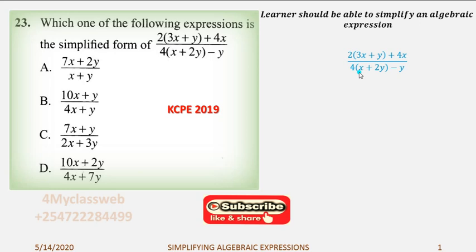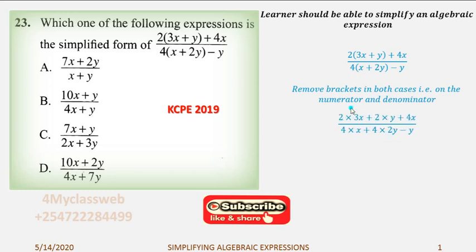I will do the same for the denominator part. And therefore, remove the bracket in both cases, that is on the numerator and the denominator part. That is the first thing that you should do. And as I have said, you take that factor which is outside the bracket, in our case here, take 2 multiplied by 3x plus 2 multiplied by y, and then add 4x. The same case for the denominator part, take 4 multiplied by x, add 4 multiplied by 2y, and then subtract y.